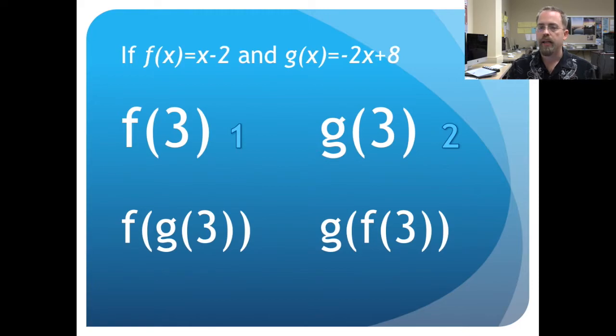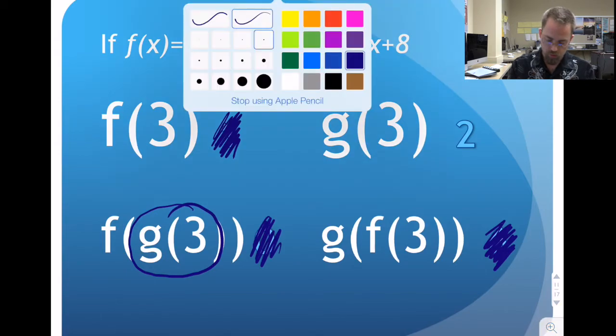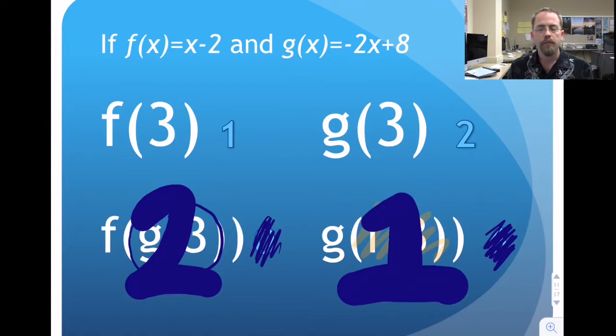Working your way from inside to outside, what happens when we try to plug in the value from g of 3 into our f(x)? This interior part right here, we know that value was 2. So we can say in huge font that this is 2. What is f of 2? 2 minus 2 is 0. Again, working our way from the inside to the outside, if we take f of 3 first, we know from a moment ago that is 1. Plugging in 1 now into g means that g of 1, negative 2 times 1 is negative 2 plus 8 is positive 6.